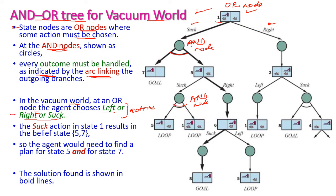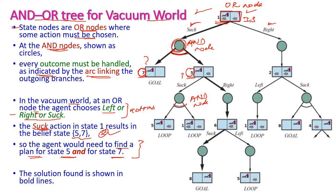At state 1 — the initial state — the agent selects the suck action. If we implement suck, the resultant state will be either state 5 or state 7. So the agent needs to find a plan for both state 5 and state 7. If the resultant state is 7, what do we do? If the resultant state is 5, what do we do? The environment has to choose what to do next, so this is called an AND node, represented by a circle. The state node is called an OR node, where the agent selects and implements the action.